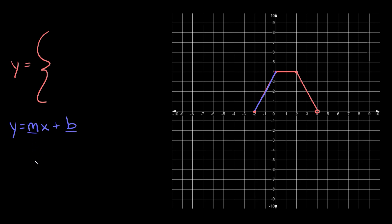So the slope, remember, is just the rise over the run. To get from one point to another on this line, we have to go up two and then over one. So the slope is going to be equal to two over one. And the y-intercept — where we hit the y-axis — is right here at positive four.